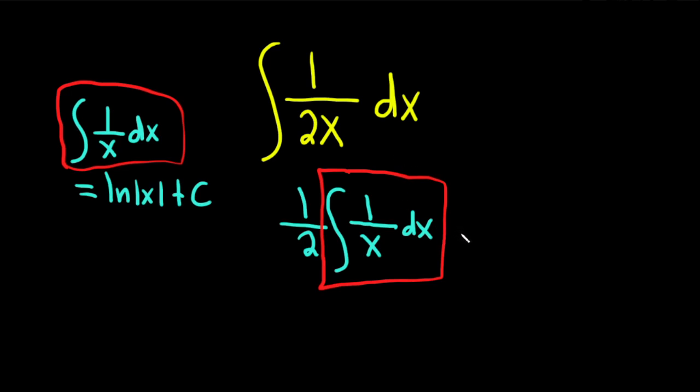So then this is equal to 1 half natural log of the absolute value of x, and then you have your constant plus C.